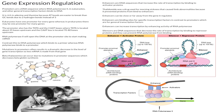Eukaryotes have one promoter for every gene, whereas in prokaryotes there may be one promoter for many genes. It's also important to note that promoters are rich in adenine and thymine. The AT bonds are easier to break than the GC bonds because there are two hydrogen bonds that connect adenine and thymine, whereas there are three hydrogen bonds that connect guanine and cytosine. So this makes sense that you want AT bonds near a region that you want to eventually break open.